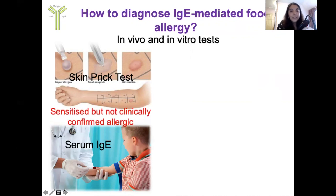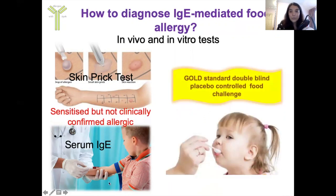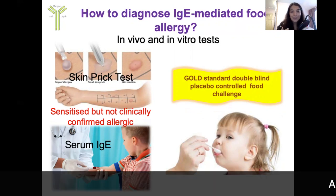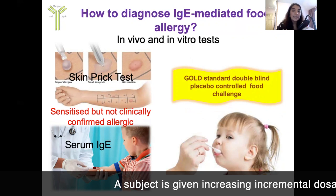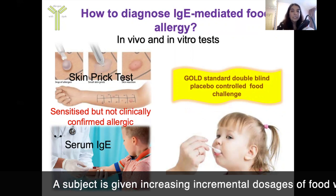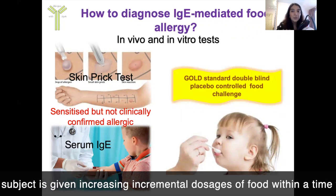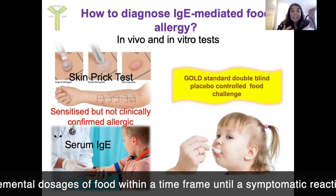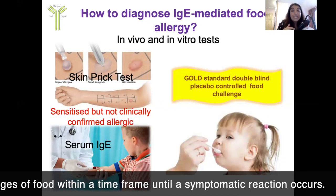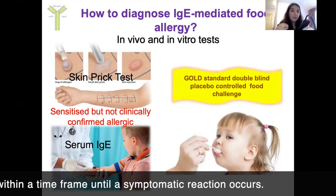How do we diagnose IgE-mediated food allergy? The gold standard method is called a food challenge — specifically an oral food challenge, or double blind placebo-controlled food challenge. This is where a patient is given incremental doses of an allergen within a specific time frame until an allergic reaction occurs.